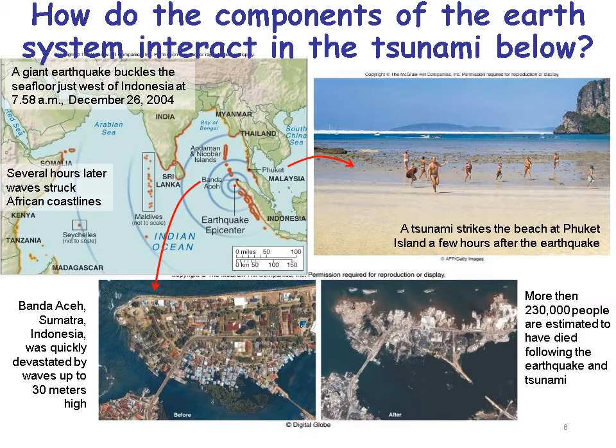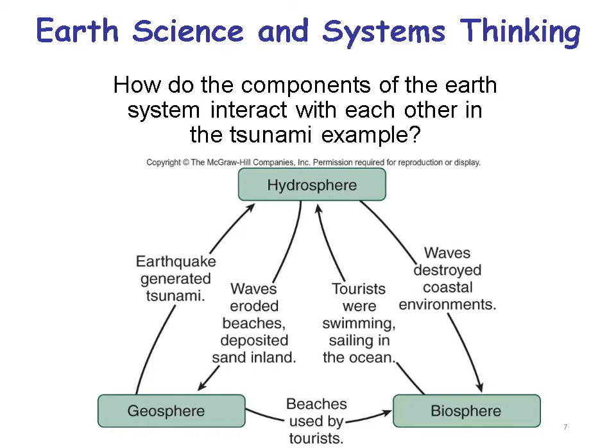On the left we see before, and on the right we see after. In the upper right we see a tsunami — that white line in the picture — striking the beach at Phuket Island in Thailand, just a few hours after the earthquake. The geosphere generated the tsunami via an earthquake, and that wave in the hydrosphere eroded beaches and deposited sand inland. Those beaches are used by tourists, so the geosphere interacts with the biosphere. Tourists swimming and sailing in the ocean represents biosphere-hydrosphere interaction, and the waves destroyed coastal environments.